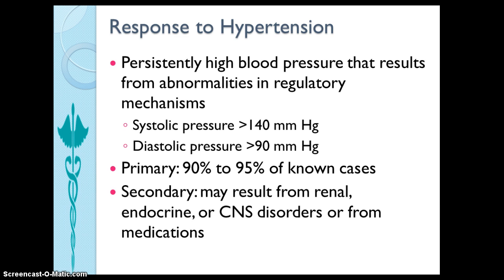Generally, genetic variations and inherited behavioral and environmental factors may increase blood pressure. These include obesity, high alcohol intake, insulin resistance, high salt intake in salt-sensitive people, aging, sedentary lifestyle, and stress. Primary hypertension makes up 90 to 95% of known cases, and usually appropriate therapy controls primary hypertension.